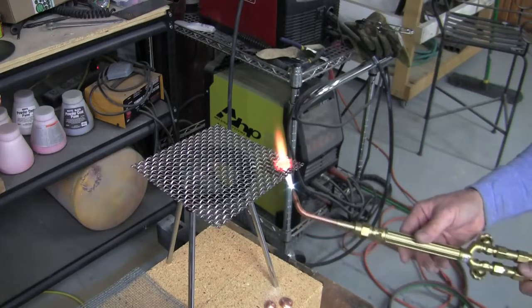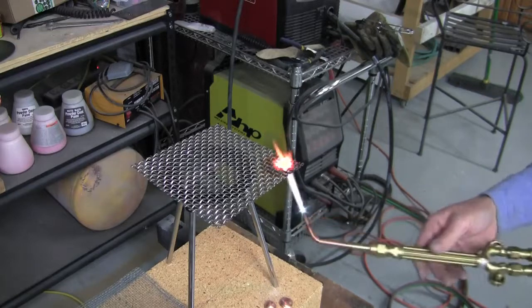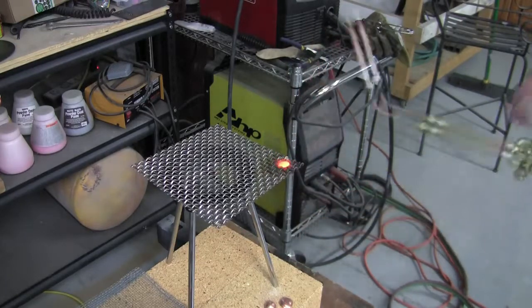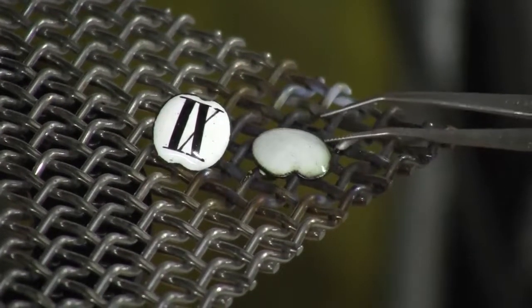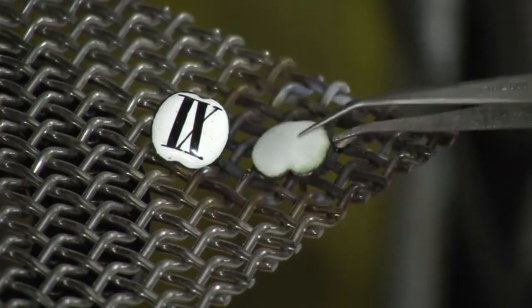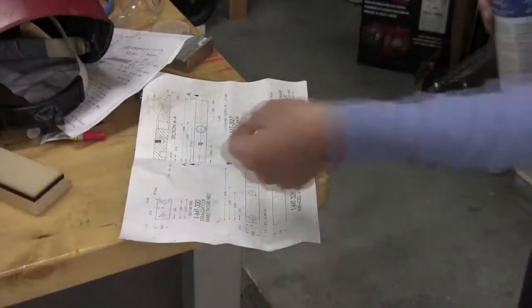And again, I'm using the torch to flow the enamel, and I think we've got a pretty close match to the original. Looks like we've got a few more little flecks of maybe copper oxides or something in there than the original, but I'm pretty pleased with that.